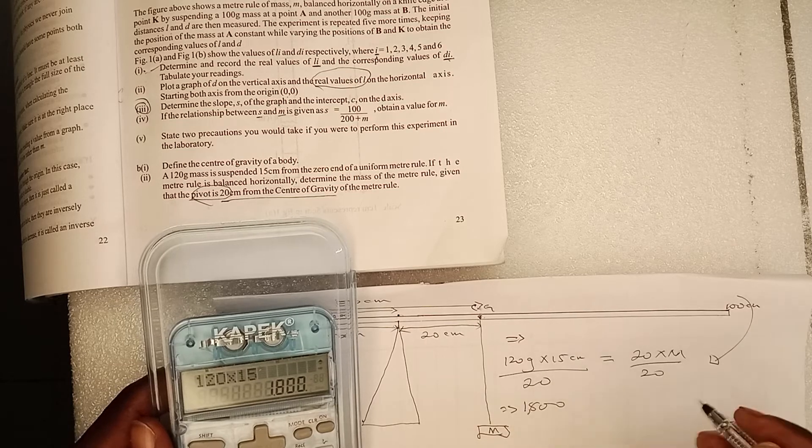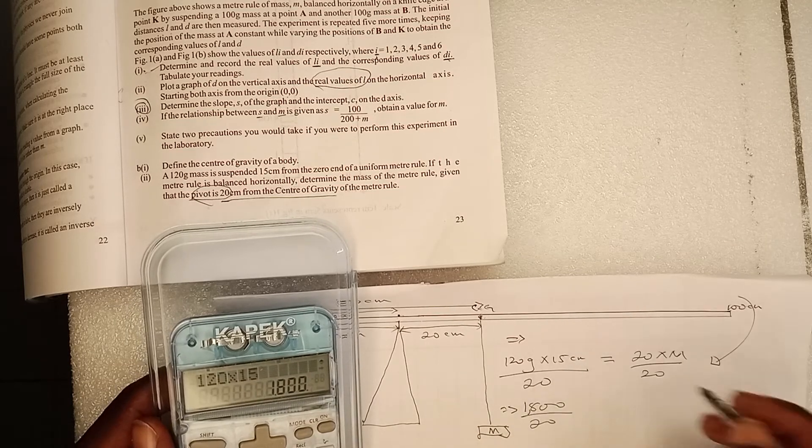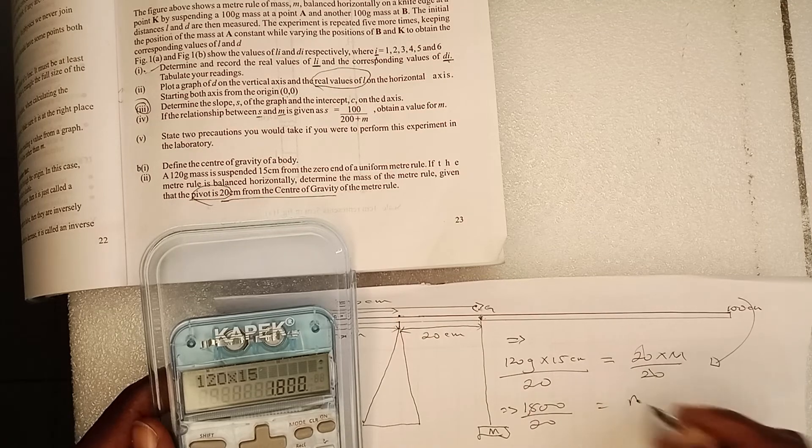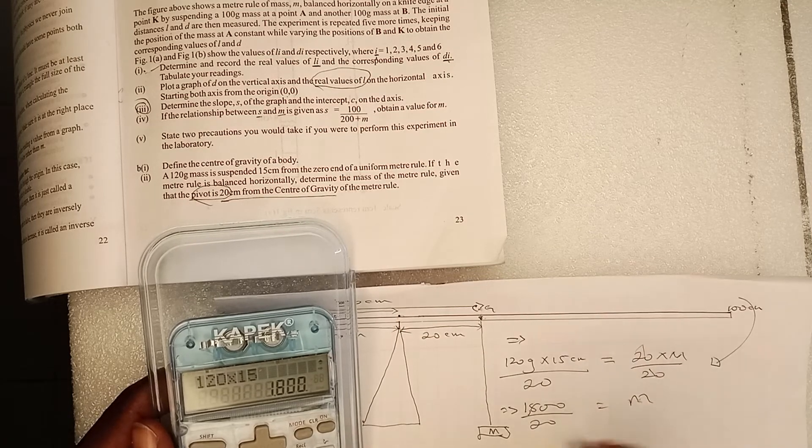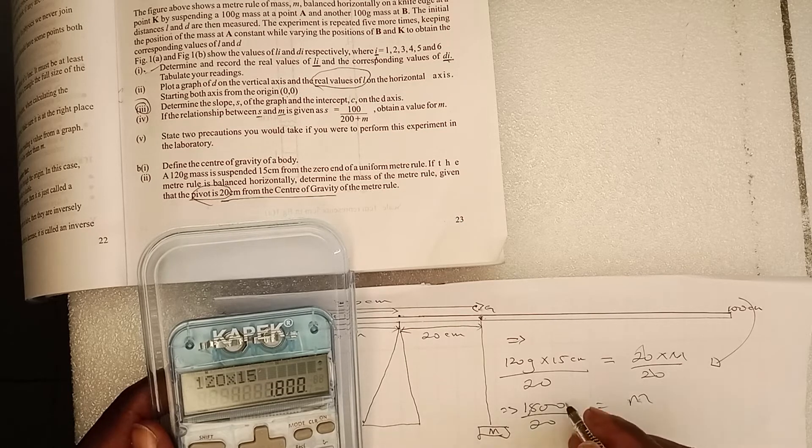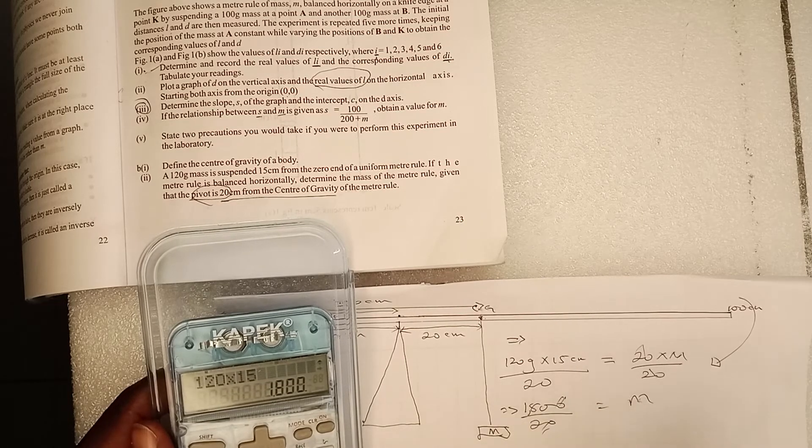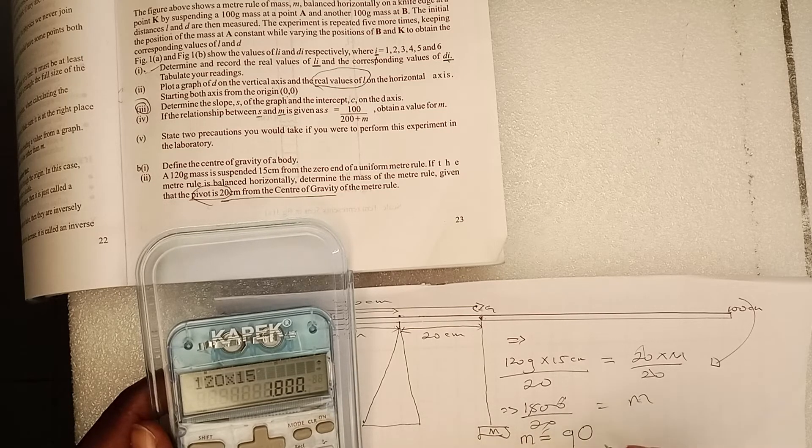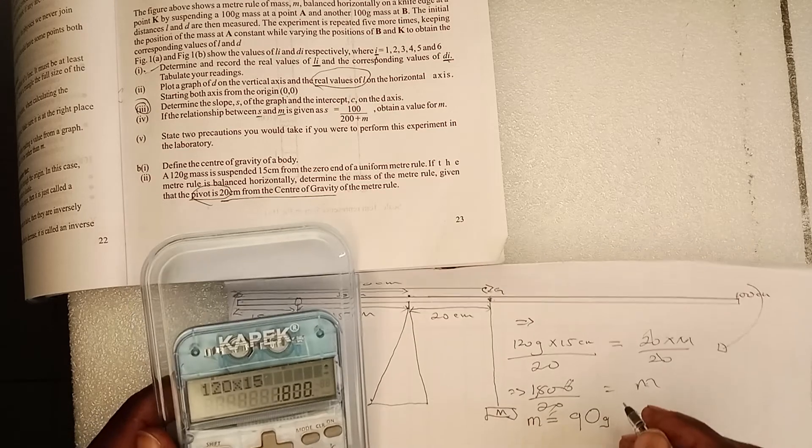1800 divided by 20, therefore the mass of the ruler... So our final answer is 90. 1800 divided by 20, therefore the mass of the ruler is 90 grams.